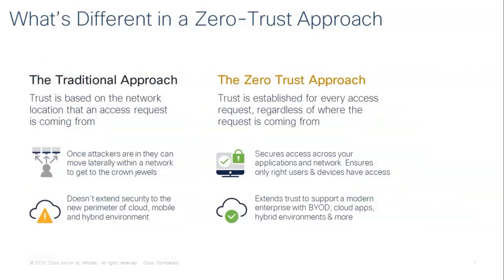When you compare the traditional security approach to Zero Trust, you find that the old classic wall-and-moat strategy relies on trust based solely on network location — where the access originated. In a Zero Trust approach, trust is more dynamic and adaptive. It is established for every access request, no matter where the request comes from or where the user is located. This approach prevents attackers from moving laterally within your network to get your data. It secures access across your apps and networks, only allowing the right users and devices to get access.